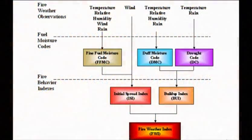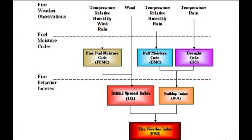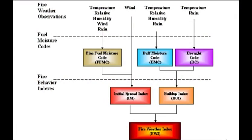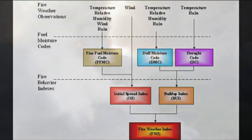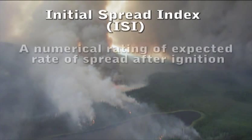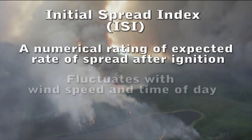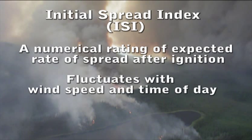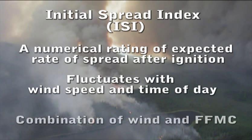The Initial Spread Index, or ISI, represents a numerical rating for fire spread immediately after ignition. It fluctuates with wind speed and time of day. The ISI is a combination of wind speed and FFMC.